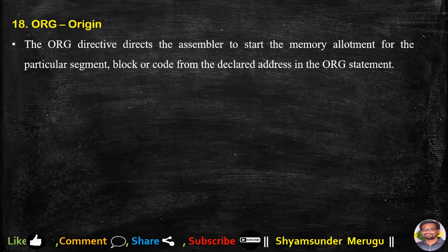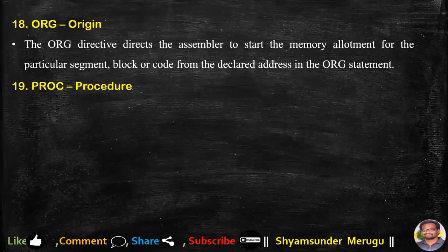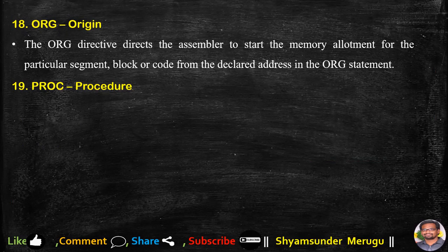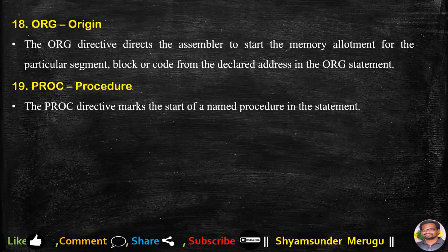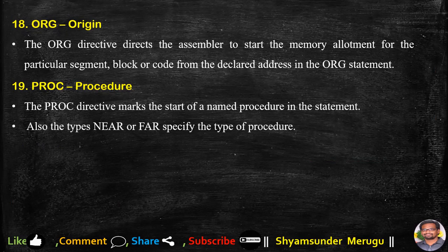ORG stands for origin. The ORG directive directs the assembler to start memory allocation for a particular segment, block, or code from the address declared in the ORG statement. If no address is given in the ORG statement, it starts from 0000H. PROC stands for procedure. The PROC directive marks the start of a named procedure, and the types NEAR or FAR specify the type of procedure.